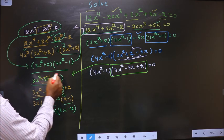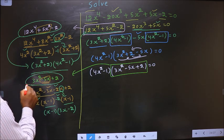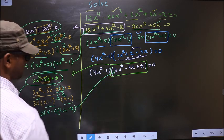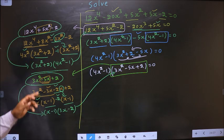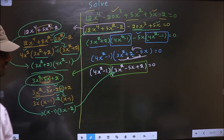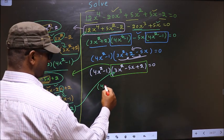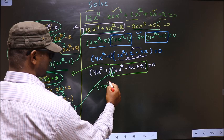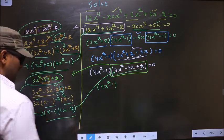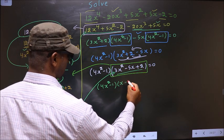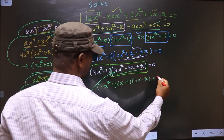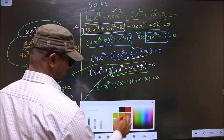Now in place of this quadratic, I will replace this over here. In place of this quadratic, this one over here — that is 4x squared minus 1. In place of this, this one: x minus 1, 3x minus 2 equal to 0.